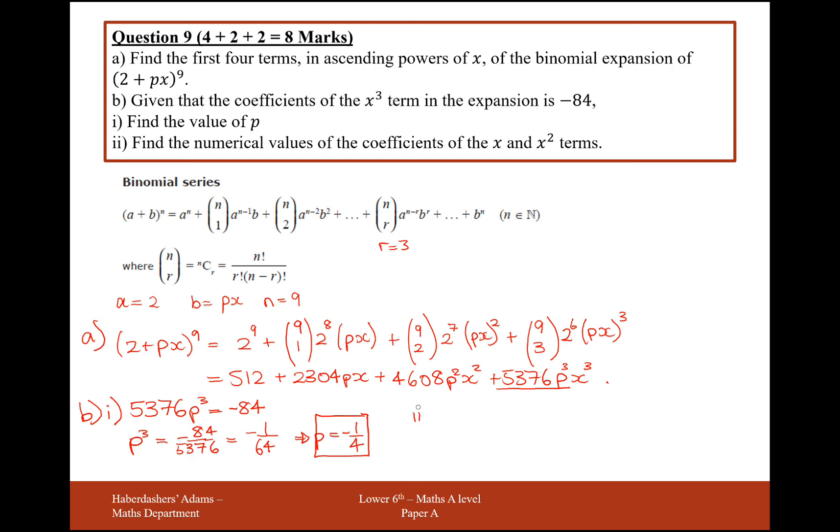Okay, for part two of this question here, we find the numerical values of the coefficients of x and x squared. So, the coefficient of x is just going to be 2,304 times minus a quarter, which is going to give us minus 576.